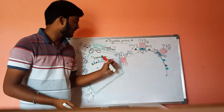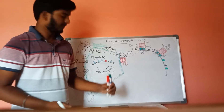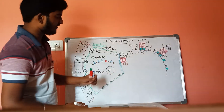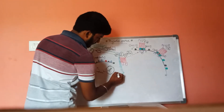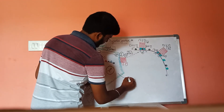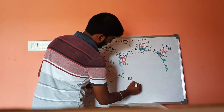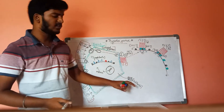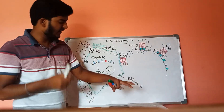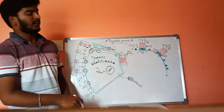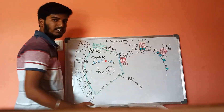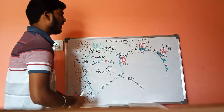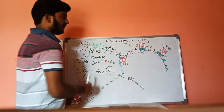Calcitonin is also formed in the parafollicular cells. The main function of calcitonin is that whenever the calcium levels in the blood are increased, calcitonin will be released to decrease the calcium levels in the blood.